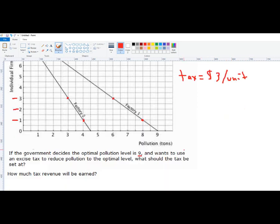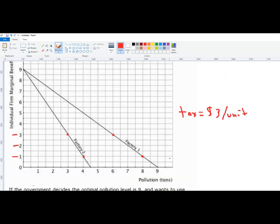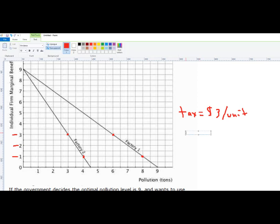And then if we wanted to know the tax revenue, we're just going to multiply. Here, I'll type that here. So the tax revenue equals the tax times quantity of pollution.